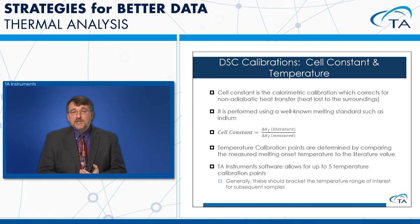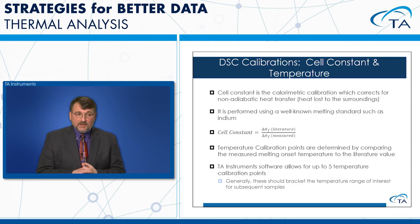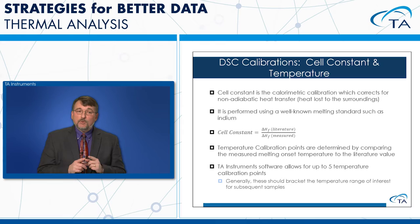Cell constant and temperature calibration are done by running a sample with a known value, like indium. The cell constant corrects for any heat loss to the surroundings, determined by comparing the measured heat of fusion to the literature value of indium. For temperature calibration, we compare the measured DSC onset temperature to the literature value. Both can be done in a single indium run, though our software allows up to five temperature calibration points.